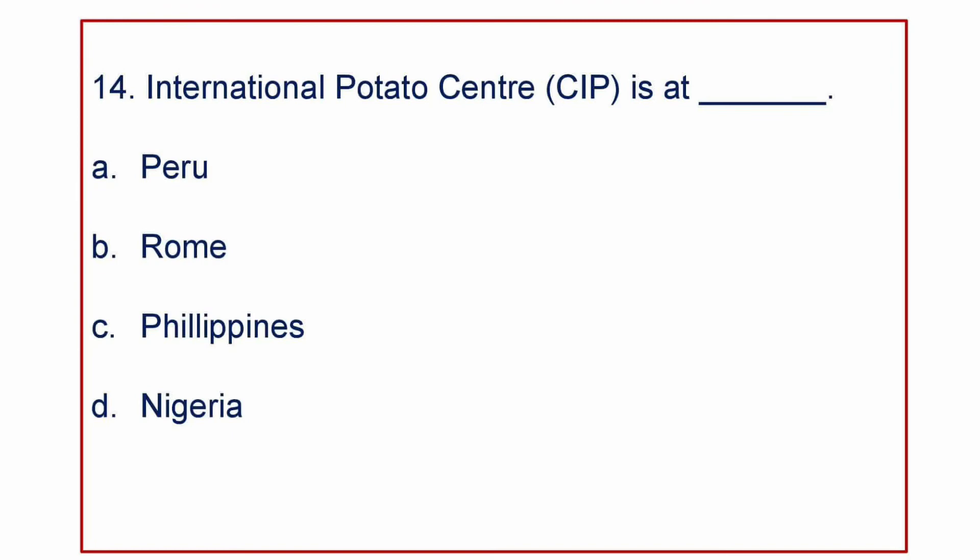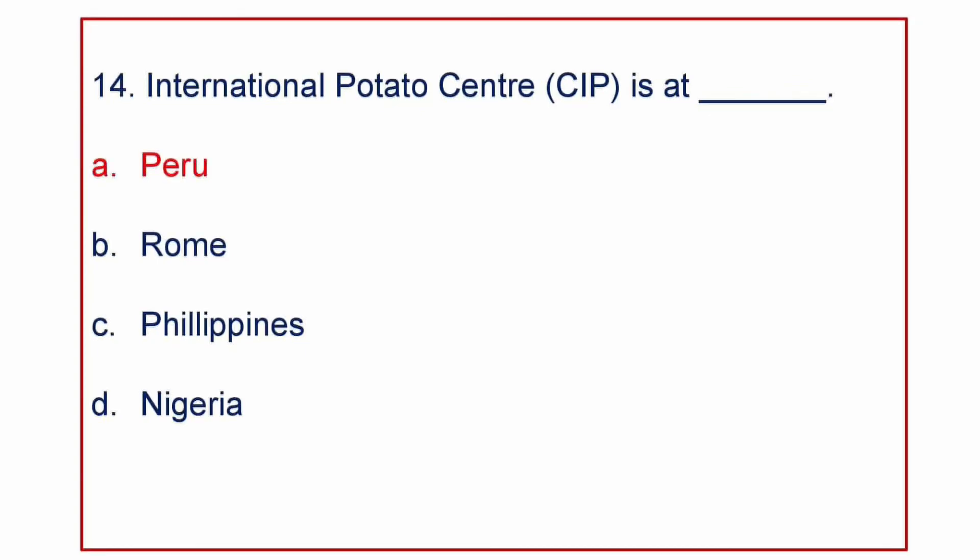Next question: International Potato Centre CIP is at — A) Peru, B) Rome, C) Philippines, or D) Nigeria. The answer is CIP is at Peru.